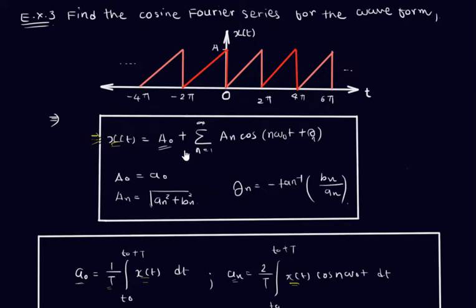The first term is A0, the second term is An, and the third terms are ω0 and θn. To find A0 — which equals small a0 — we first need to find the trigonometric Fourier series, and from that we can derive the cosine Fourier series.